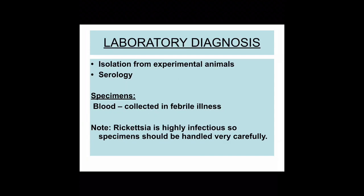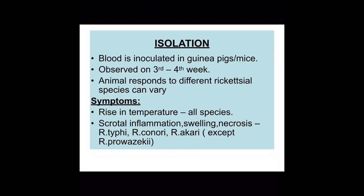Now, about diagnosis. Laboratory diagnosis is the main form of diagnosis, including serology and isolation on experimental animals. The specimen collected is blood, which must be taken when the patient is in the febrile period of the illness. In the isolation method, blood is inoculated in guinea pigs or mice, and the animals are observed on the third to fourth week, bearing in mind that animals respond to different rickettsial species differently.